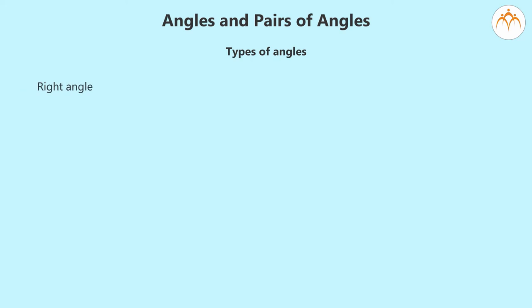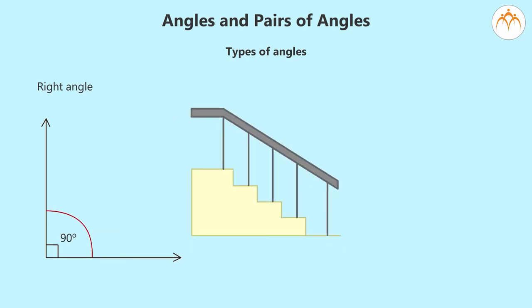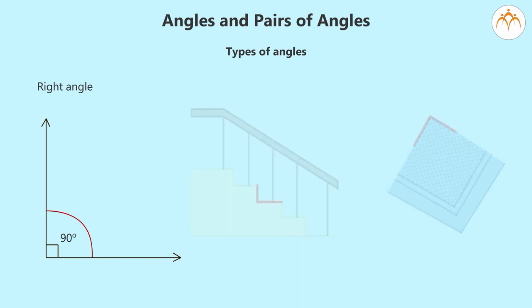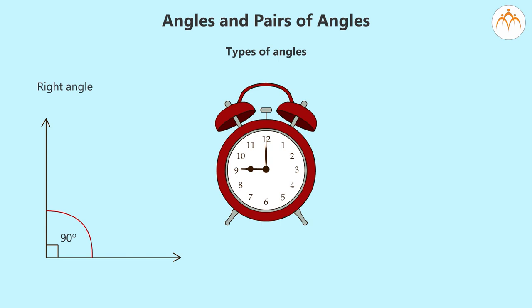Types of angles. Right angle. When two rays meet, then from their starting point, a 90-degree angle gets formed. This is called a right angle. The corners of steps, the corners of handkerchiefs are right angles. When it shows 9 in the clock, then a right angle gets formed between the hands of the clock.